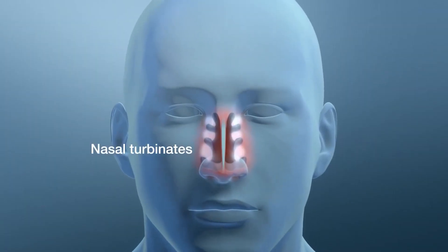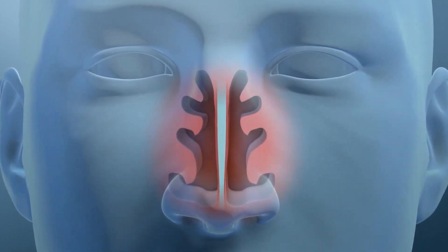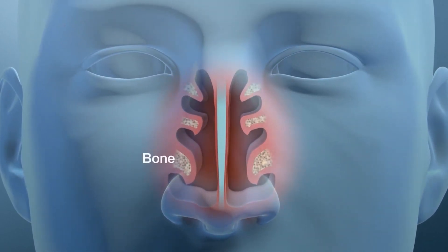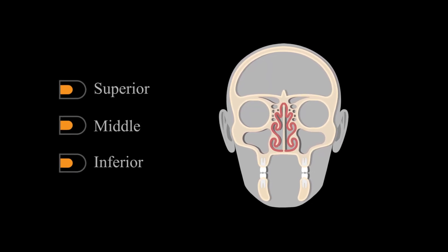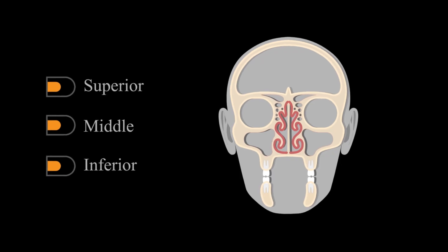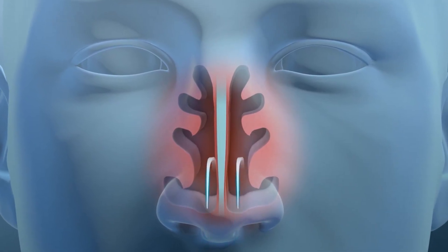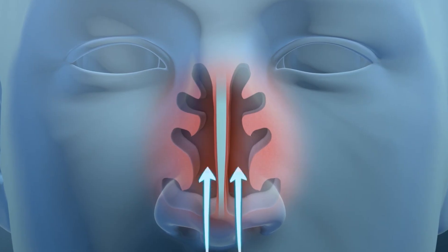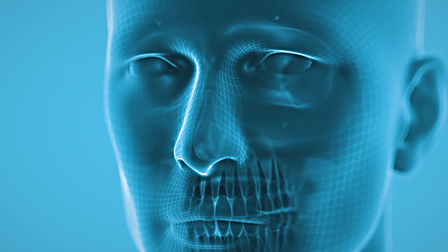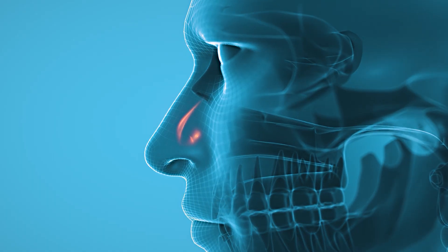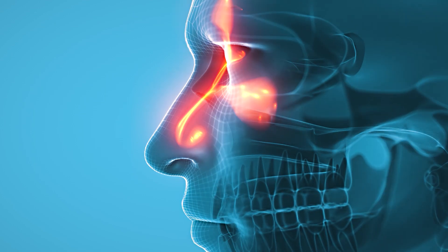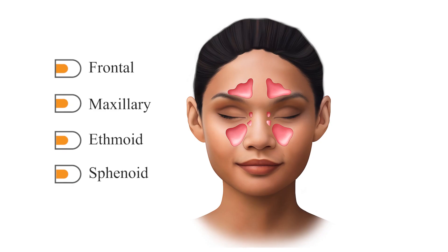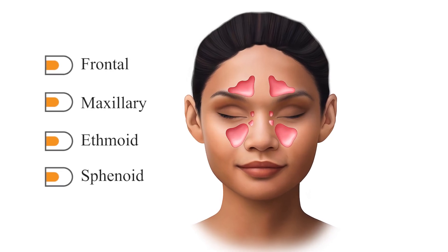Inside the nasal cavity are several structures called turbinates, or nasal conchae — bony projections covered with soft tissue. There are usually three turbinates on each side: the superior, middle, and inferior turbinates. These structures increase the surface area inside the nose, which allows for better filtering and conditioning of the air. The nasal cavity also contains small openings that connect to the paranasal sinuses — air-filled spaces in the skull bones that help reduce the weight of the head, produce mucus, and affect the sound of our voice. The sinuses include the frontal, maxillary, ethmoid, and sphenoid sinuses.